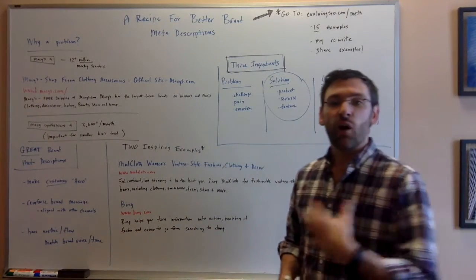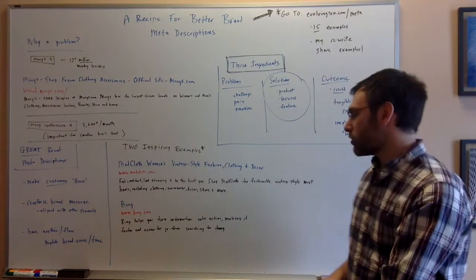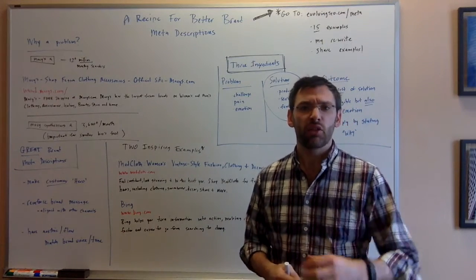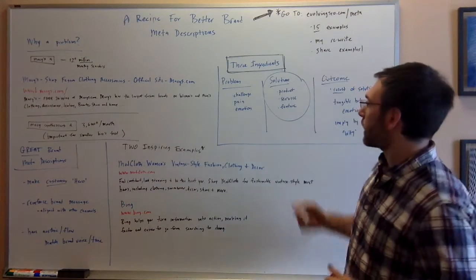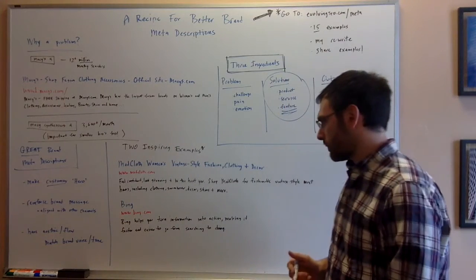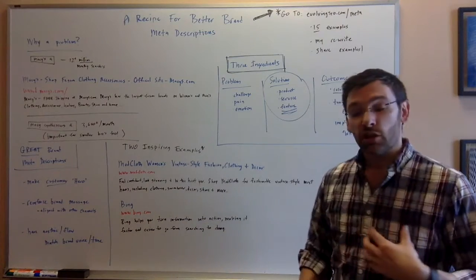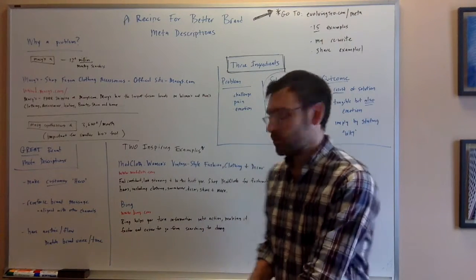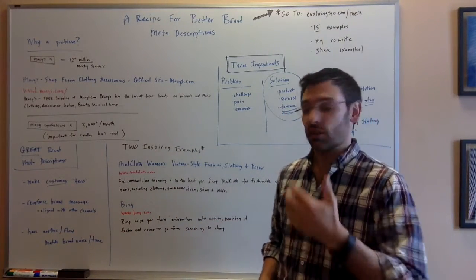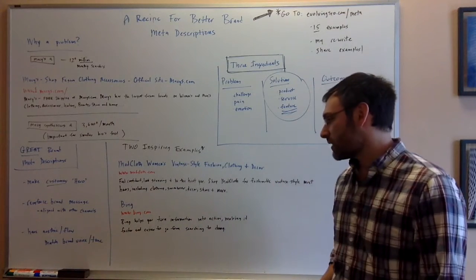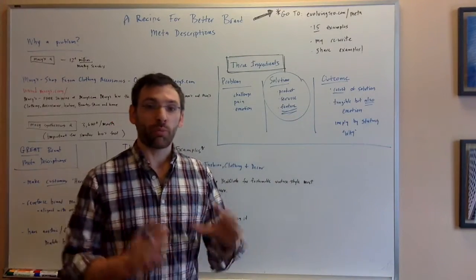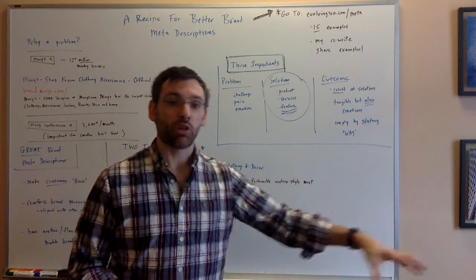So Bing is telling you the outcome or result of what you're going to get by using their search engine. They're not saying find the website you want to find or find the product you want to find. They're not telling you the direct result of their product. That's a feature. They're not telling you the feature of their search engine. They're telling you the outcome of what you're going to find. They're telling you that they're actually conveying that they're going to empower you to do what you want to do. You're going to turn information into action. It's going to be faster. It's going to be easier to find. And you're going to go from doing what you want to do. And Bing is going to move out of the way. So that's what Bing is conveying here is that they're enabling you to move on with what you were trying to do.